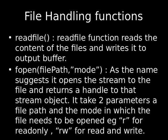fopen takes two arguments: first, a file path, and then a string mode. As the name suggests, it opens a stream to the file and returns a handle to that stream object. The second parameter, mode, can be specified as 'r' for read-only and 'rw' for read and write.